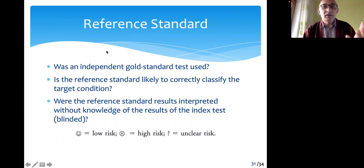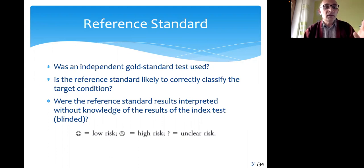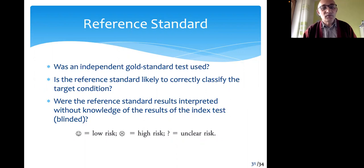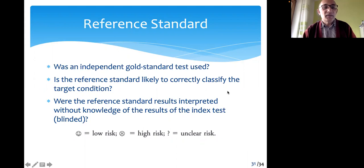The reference standard, or gold standard, should also be a valid and useful standard. For diagnosing muscular dystrophy, the gold standard might be muscle biopsy, whereas for infections the gold standard is considered to be culture. Culturing is more expensive and requires more time, which is why we try to find index tests that help us achieve rapid diagnosis.